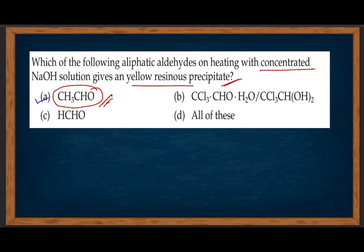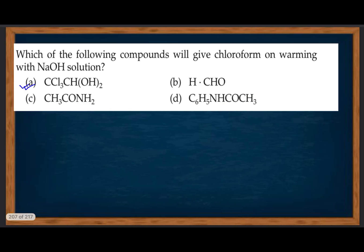In aldol condensation, aldehydes with alpha-hydrogen react. Which of the following compounds will give chloroform on warming with sodium hydroxide solution? CCl₃ group containing compounds — CHCl₃ can be converted to carboxylic acid with NaOH.